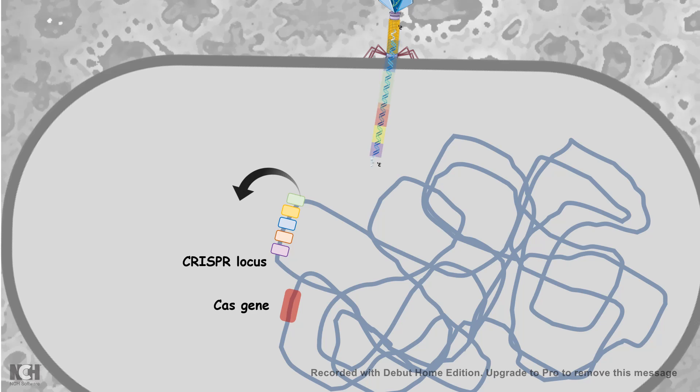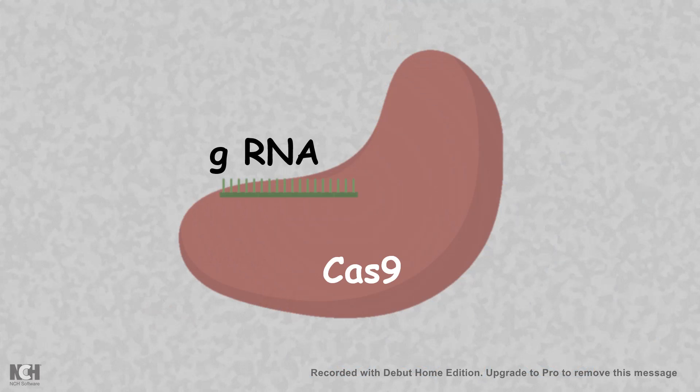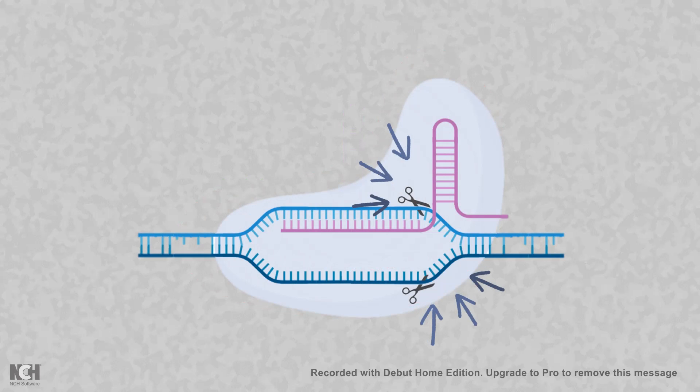Now this CRISPR locus would create specific RNA which is targeting the phage genome, and the Cas gene product which is Cas9 would get associated with that RNA which is produced by the CRISPR locus called guide RNA and another RNA called tracer RNA, and ultimately this Cas9 along with this tracer and guide RNA would cleave the phage genome.